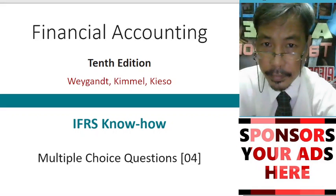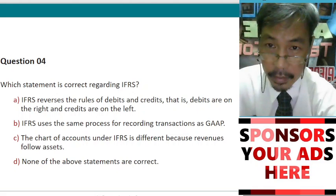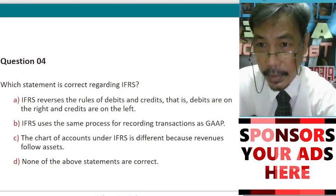Which statement is correct regarding IFRS? A. IFRS reverses the rules of debits and credits, that is, debits are on the right side, credits are on the left side. B. IFRS uses the same process for recording transactions as GAAP.